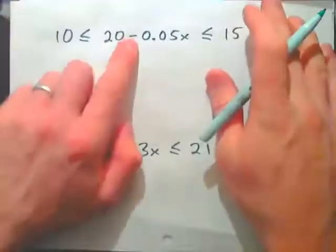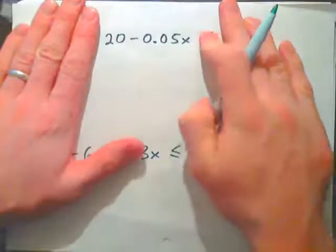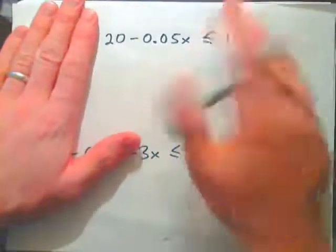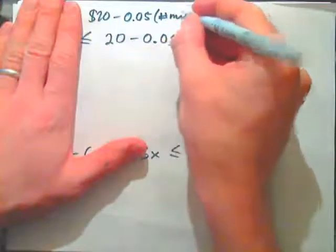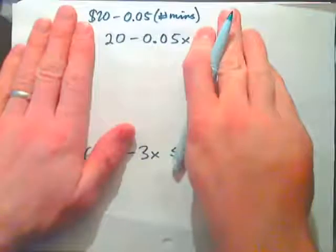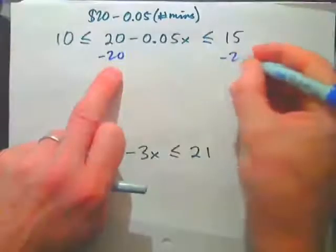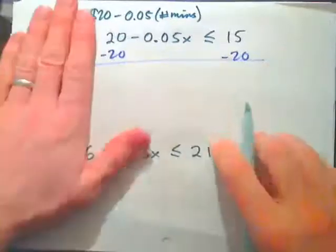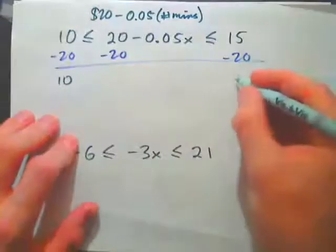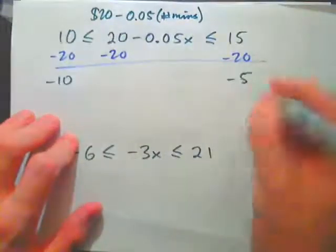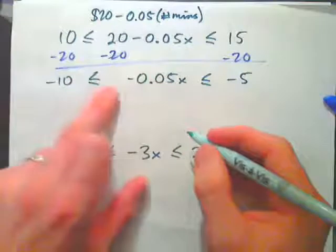We could also look at when we have a negative x term. You might have a calling card where the initial value is $20 and it costs 5 cents per minute — so the value is $20 minus 0.05 times x, where x is the number of minutes on the card. When is that value between $10 and $15? If you subtract 20 from the middle, you must subtract 20 from both sides. We get negative 0.05x ≤ negative 5 and ≥ negative 10.